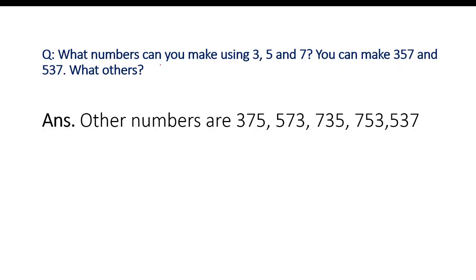What numbers can you make using 3, 5, and 7? You can make 357, 537 — and what others? Children, you have these 3 digits and you have to make different types of numbers with the help of these 3 digits. First we will write the place values: 1, 10, 100.